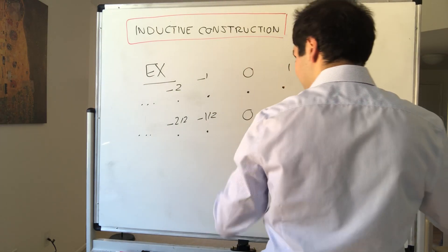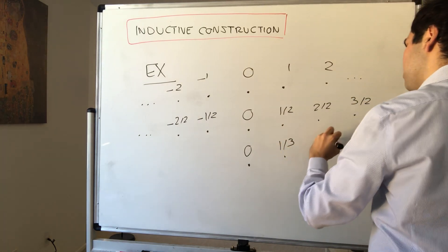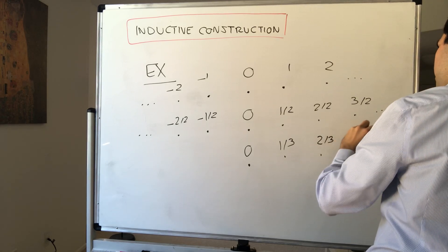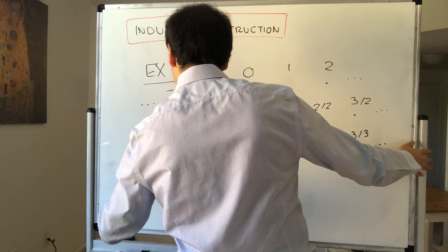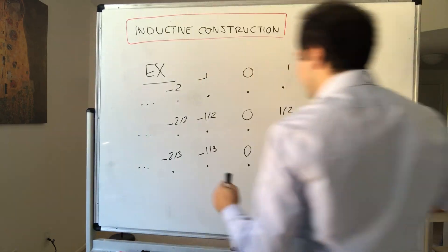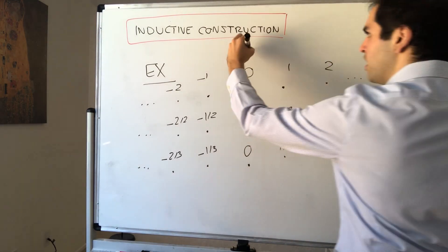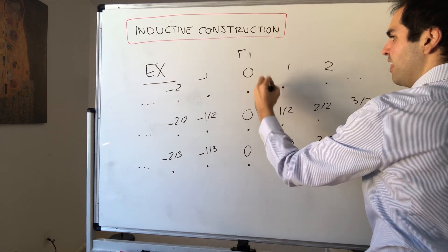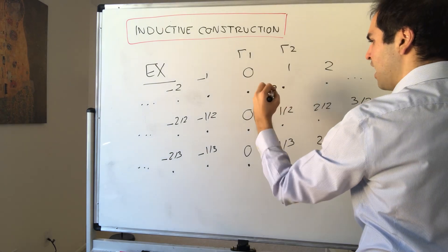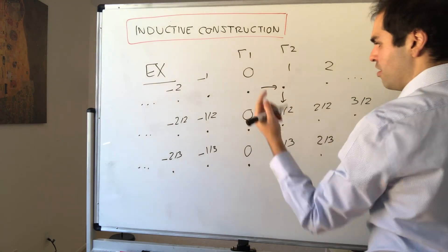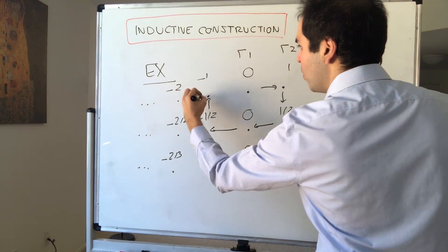In the third row you put all the thirds: 1/3, 2/3, 3/3, and also −1/3, −2/3, etc. Now consider the following sequence: you start at 0, so r_1 = 0, then go to 1, so r_2 = 1, and then go down — r_3 = 1/2.